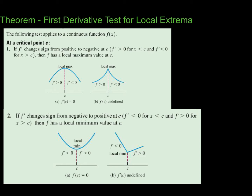The first derivative test goes as follows for a continuous function f(x). First possibility: if the derivative changes sign from positive to negative at a critical point c, then f has a local maximum value at that critical point. The function is increasing to the left and decreasing to the right. This applies whether the critical point makes the derivative equal to zero or makes it undefined.